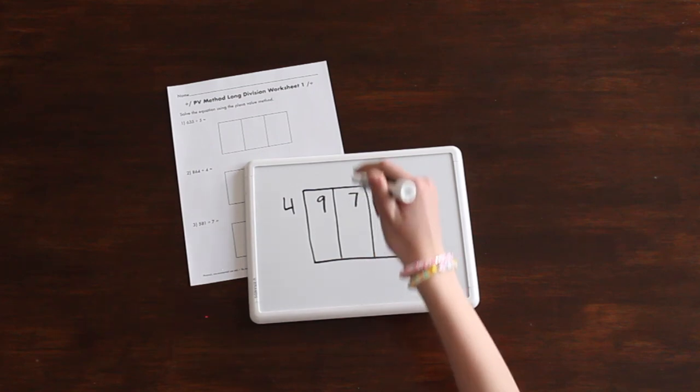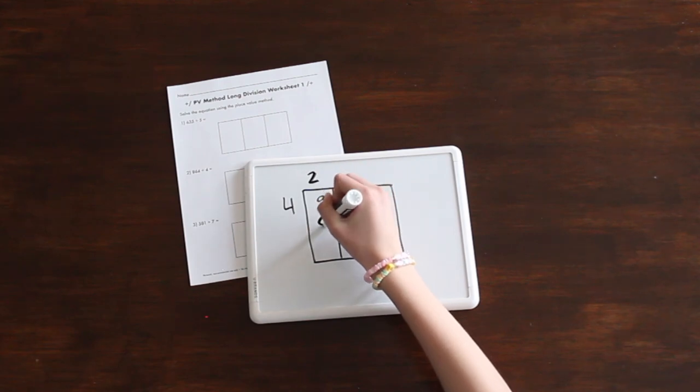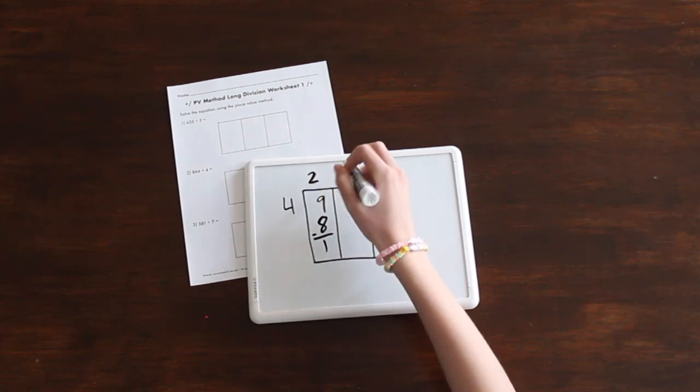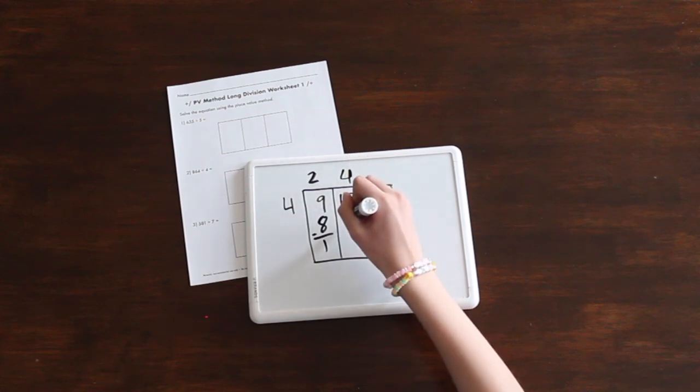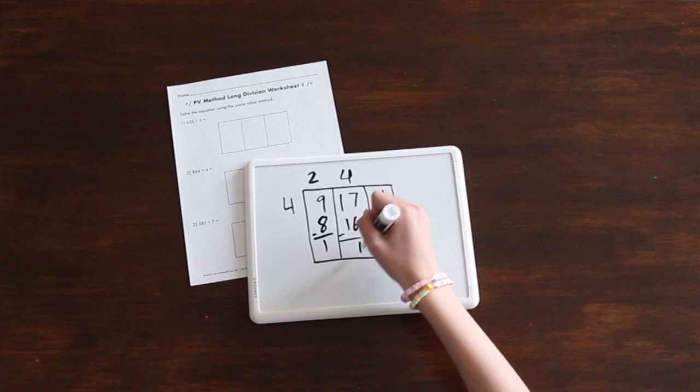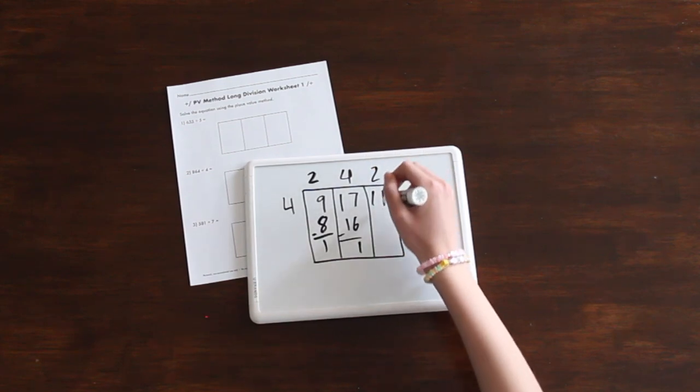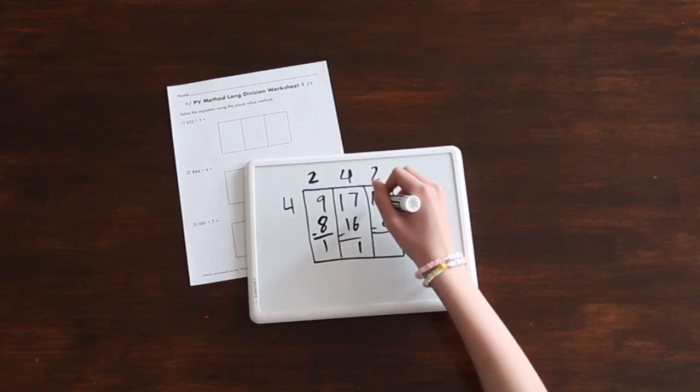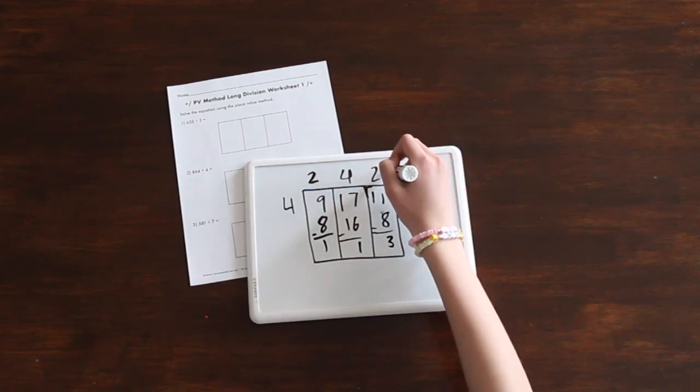9 minus 8 is 1. Take the extra 1 and break it into 10 of the next place value by moving it in front of the number. Now we're dividing 17 by 4. The closest is 16, which is 4 times 4. So put 4 at the top and the 16 under the 17. Subtract and bring that extra 1 in front of the 1 in the 1's place to make 11. Now what's the closest to 11 without going over? It's 8. So put your 2 at the top and write the 8 below the 11. Subtract to get 3. If we had another place value remaining, we would put 3 in front of it. But since we're in the 1's place, that is our remainder.